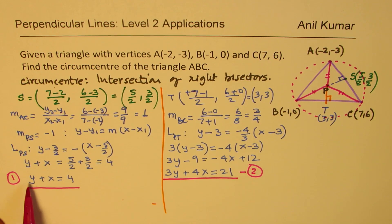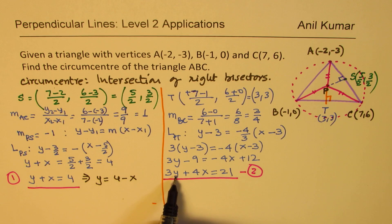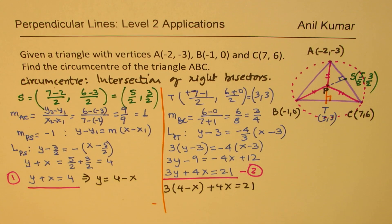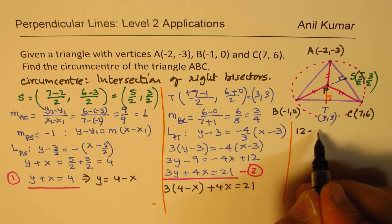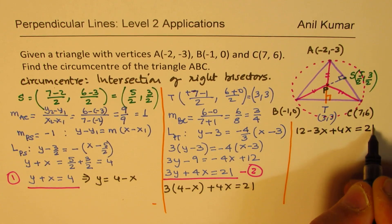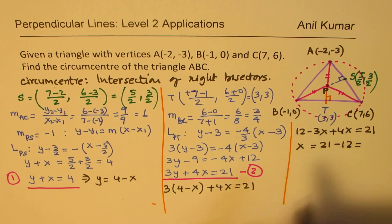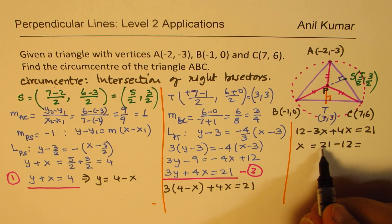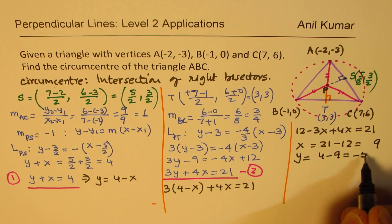Now, to solve these two, we can substitute the value of y from here. In this case, y = 4 - x. So I'll substitute y here. So we can write 3(4 - x) + 4x = 21. And from here, we can find the value of x. So that gives us 12 - 3x + 4x = 21. And that gives us x = 21 - 12 = 9. Value of y will be 4 - x, so 4 - 9, which is -5.